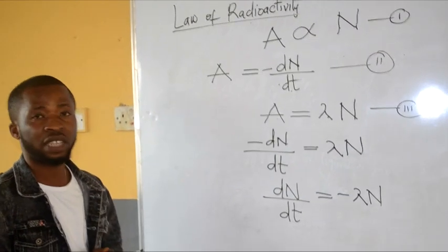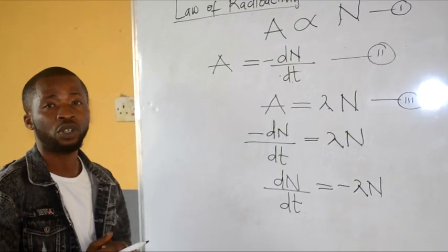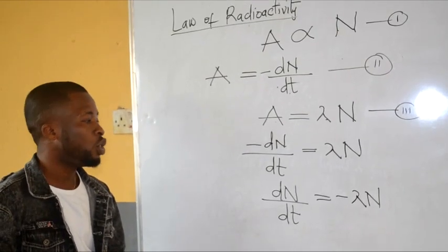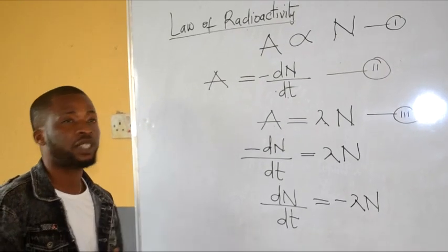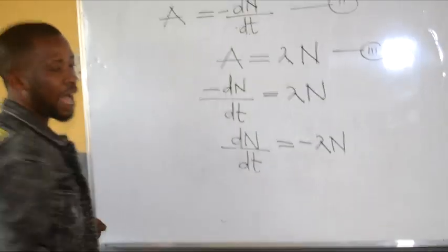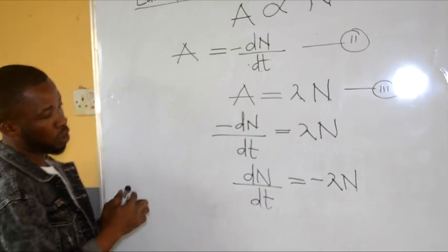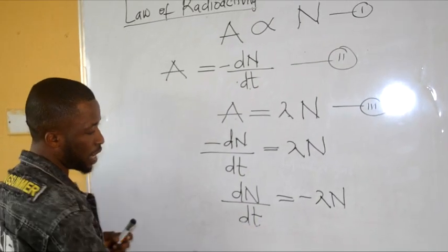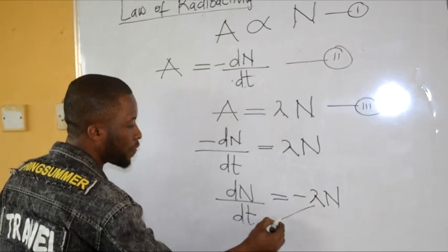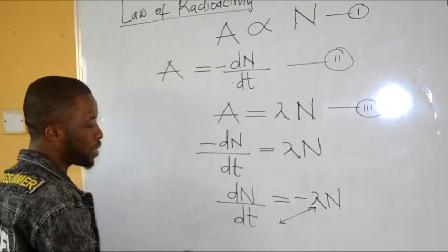How do we get a normal function from a derivative function? What we do is integrate — we integrate both sides. By integrating, I collect all the N terms together in this form, so I have the dN over N, and the t goes to the other side.